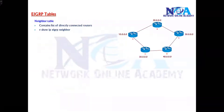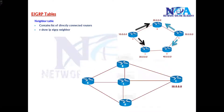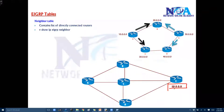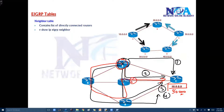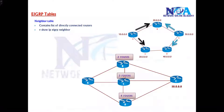Apart from the neighbor table, EIGRP also maintains a routing table and a topology table — similar to OSPF's database table. The topology table contains a list of the best routes learned from each neighbor. For example, to reach a specific 50.x network, Router B may have multiple routes — one route, a second route, a third route — and there are plenty of possible paths.